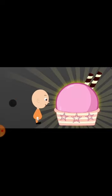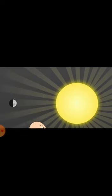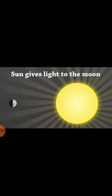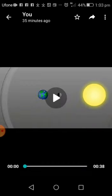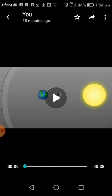Students, I will now show you a video so you can learn more about the moon. The moon revolves around the Earth in a fixed orbit. The moon does not have its own light — the sun gives light to the moon.